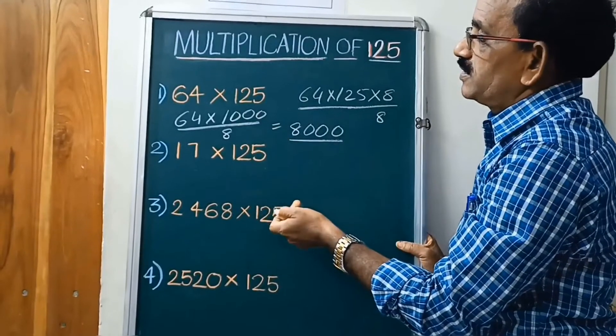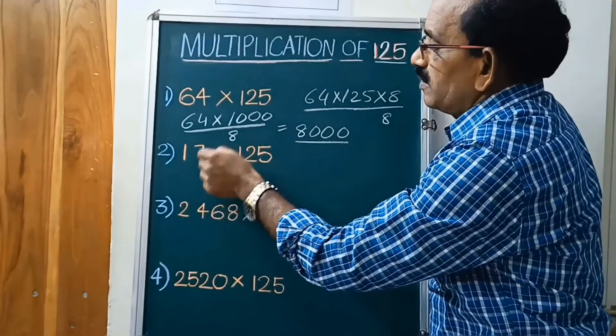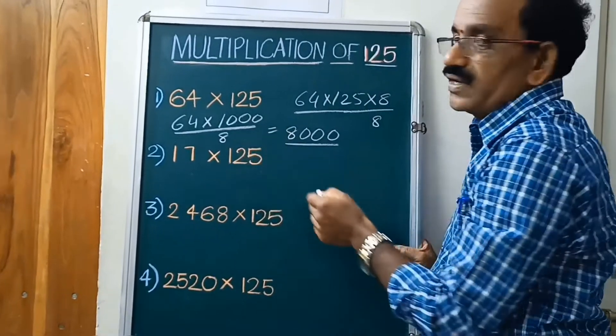This is equal to multiply. Your number also multiply with 125.